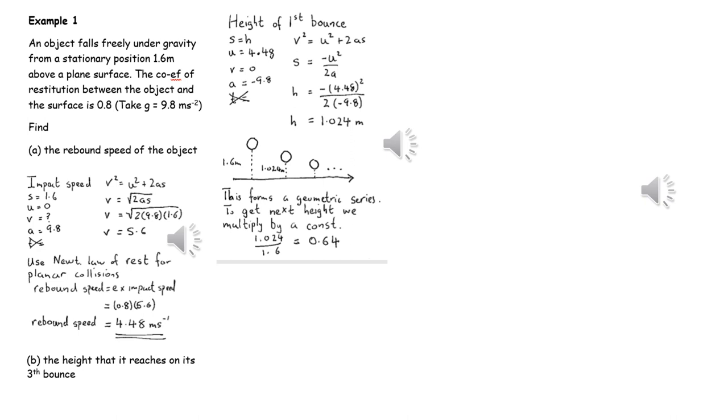We know how far it fell initially and the height of the first bounce. Realizing this will start to create a geometric series, we can work out the value of r, and then using that value of r, we can work out the height after the third bounce.